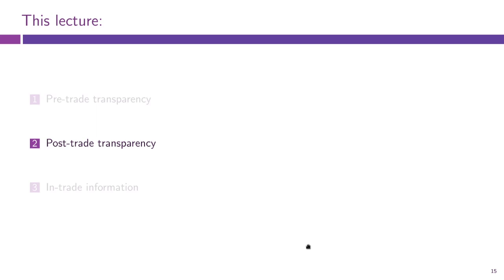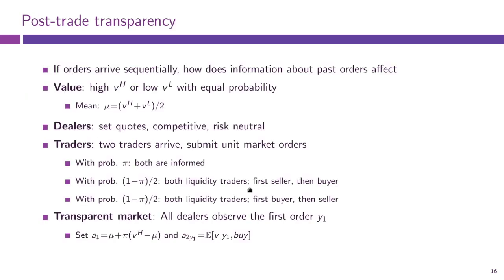So that was about three different aspects of pre-trade transparency, although the latter was more related to in-trade information - information about other transactions. Now let us look at the effects of revealing post-trade information, of being able to access historical data. The main kind of transparency we'll look at is information about past orders - how does information about past orders affect market outcomes? The model will be almost exactly the same as the toy model we just had, but the two orders will now arrive in sequence instead of simultaneously.